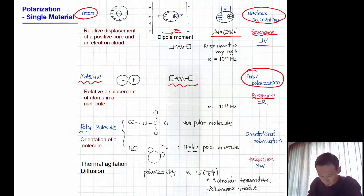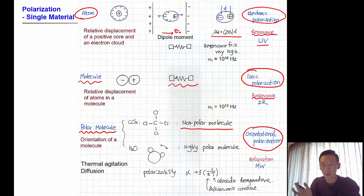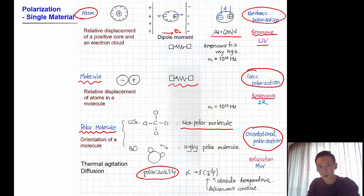The last type is the polarization of a molecule. If the molecule is nonpolar — like CCl4 or CO2 — it does not show any orientational polarization. But when it has a polarity, like a highly polar molecule such as water, it will show orientational polarization as it rotates in response to the external electric field. However, if the temperature is high, the molecules tend to move randomly due to thermal agitation.